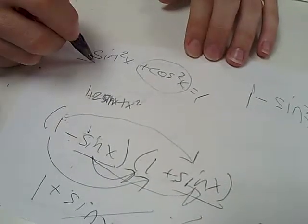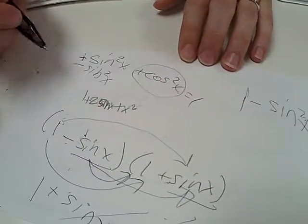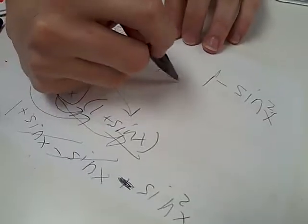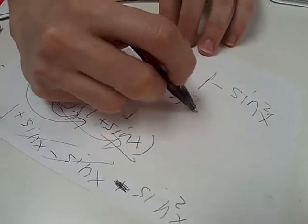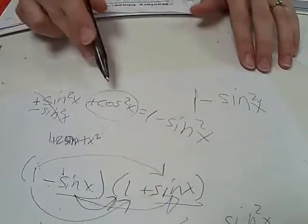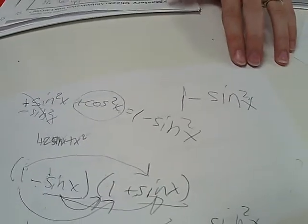Subtract it. So we're going to do minus sine squared x. So it'll cancel. We're going to have to do it to the other side too. Okay? Yeah. So now we have cosine squared x equals 1 minus sine squared x.